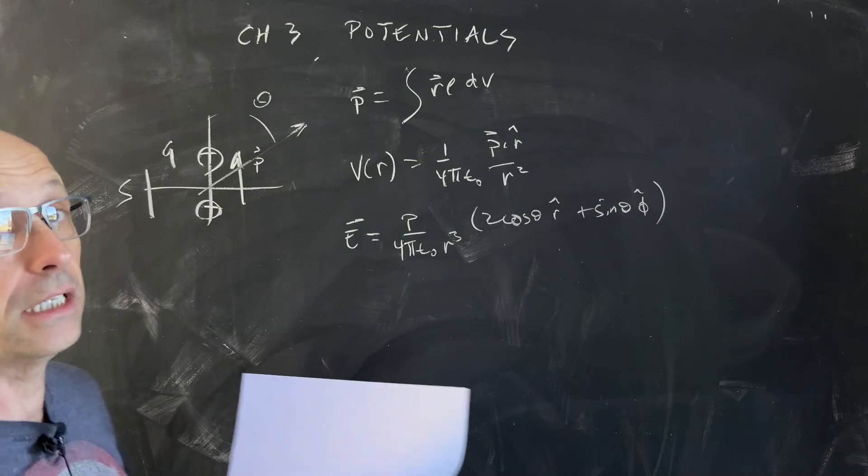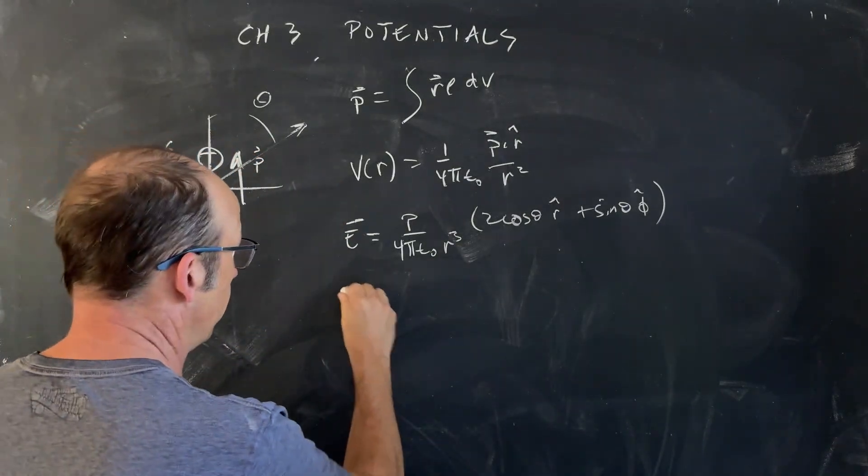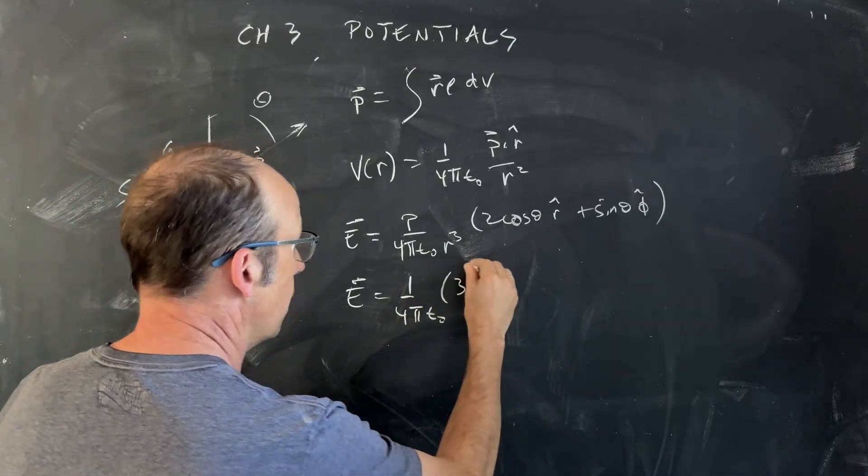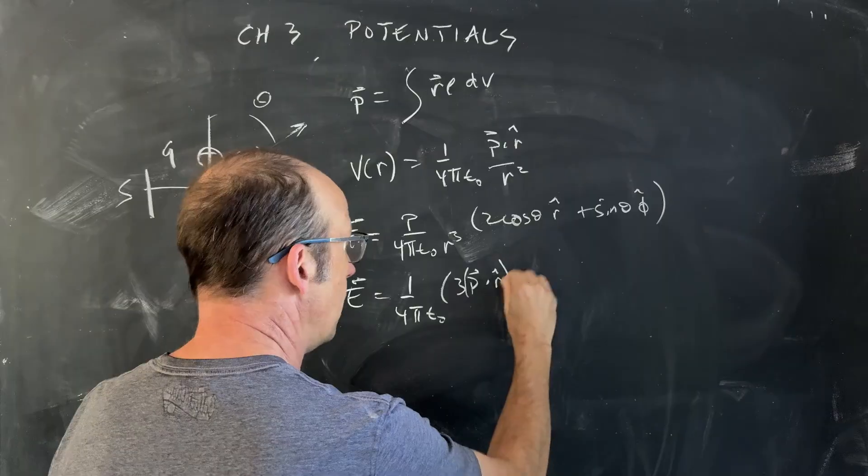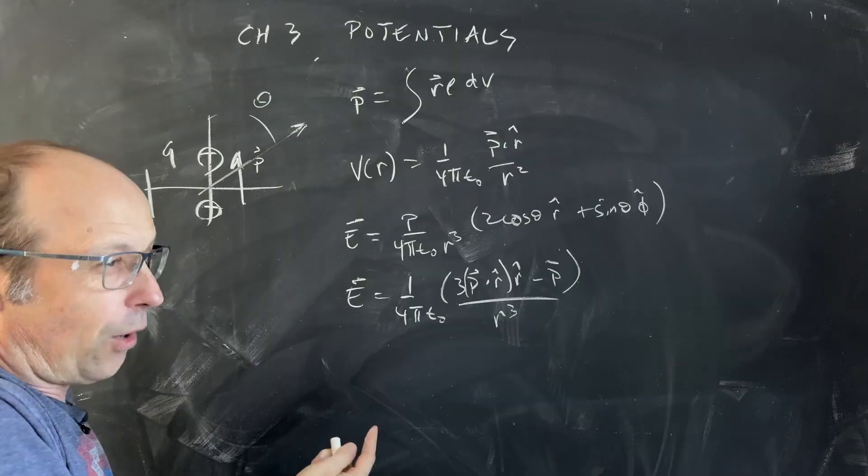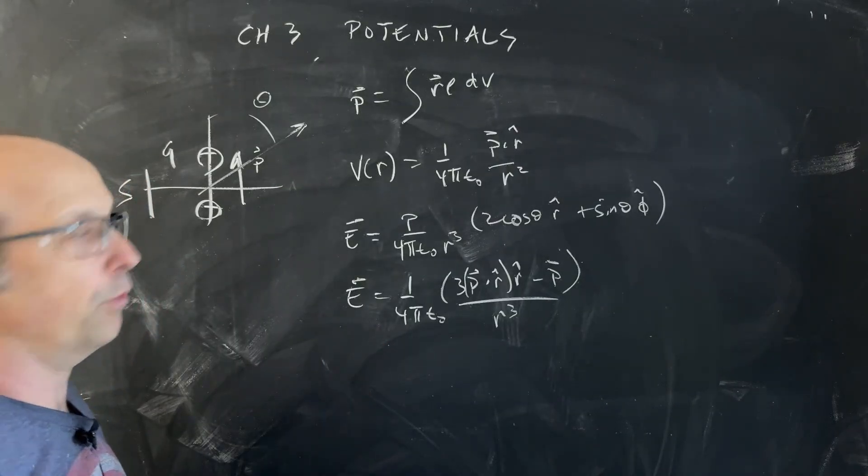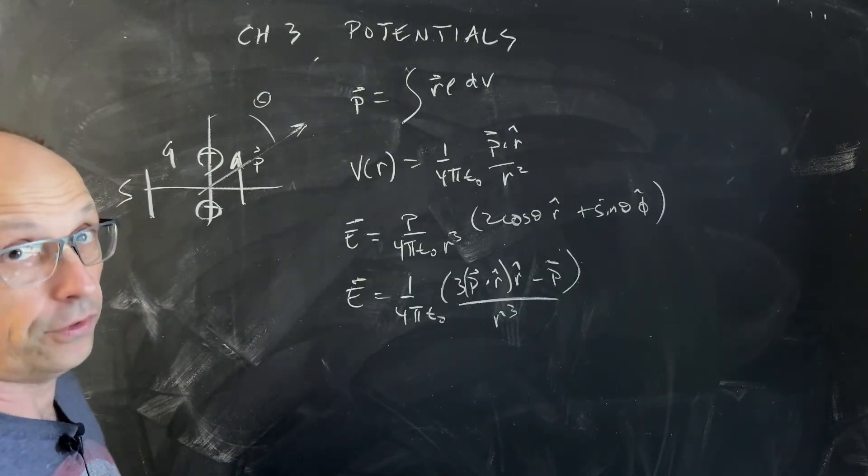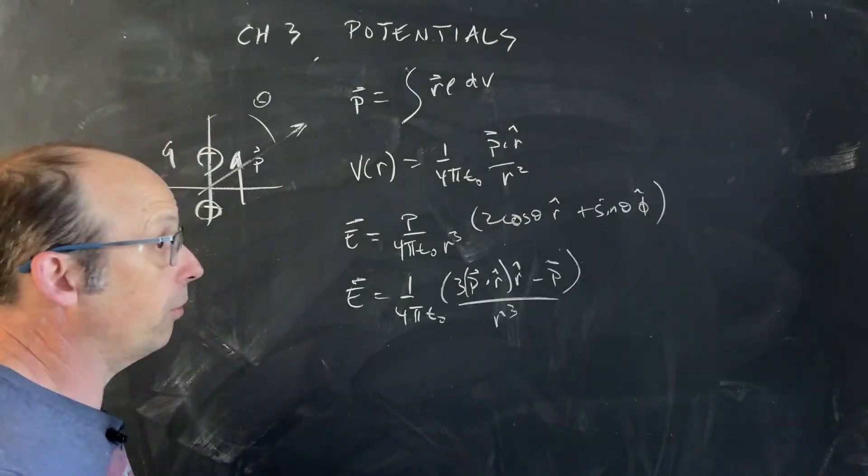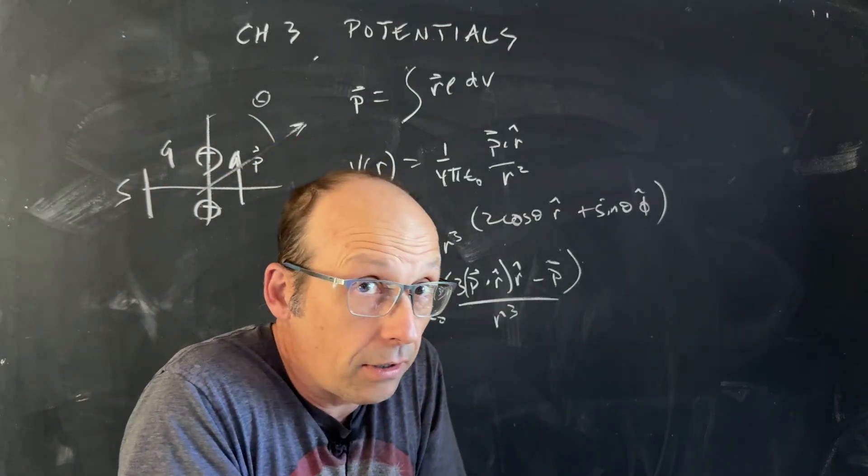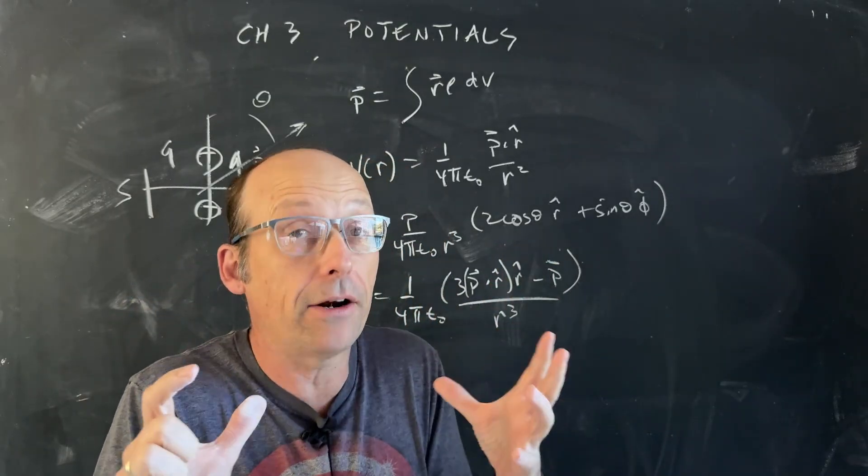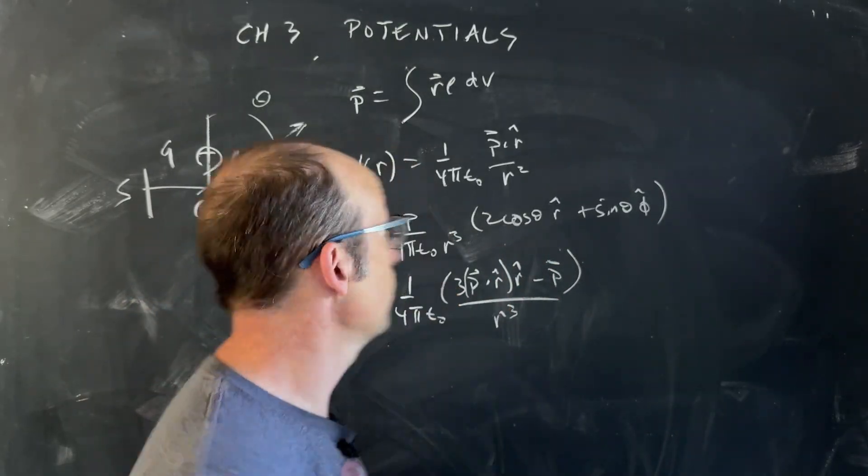And that's a nice thing to derive. I like this version better. E is 1 over 4 pi epsilon naught 3, P dot R hat times R hat minus P, all of that over R cubed. Because this doesn't really care what coordinate system you use. This is really great numerically. If you want to numerically find the electric field due to a dipole, that's the electric field. And why do we care about dipoles? Well, once we start modeling matter, the dipole matters a lot. Because we can model the effect of electric field on matter as inducing tiny little dipoles. So that's that.